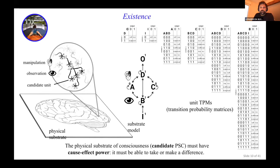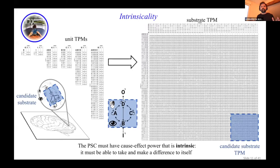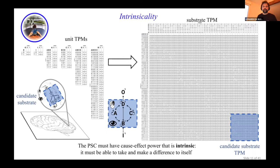The link to quantum mechanics is really about which Hamiltonian you use to generate this transition probability matrix — I'm agnostic about that at the moment. Intrinsic probability means that making a difference has to happen within the system: A has to cause B, C, or D and has to be caused by something like B, C, or D. If a unit doesn't cause or isn't caused by any other unit, it doesn't belong to the physical substrate — it's not intrinsic. That candidate system is what we test to know if it's conscious. Everything outside is a background condition.